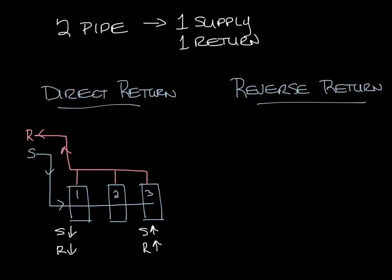So looking at this you can see that the loss going through the first unit through the supply and up into the return is going to be the lowest. So during low flow conditions most of the water will want to go through the first unit.